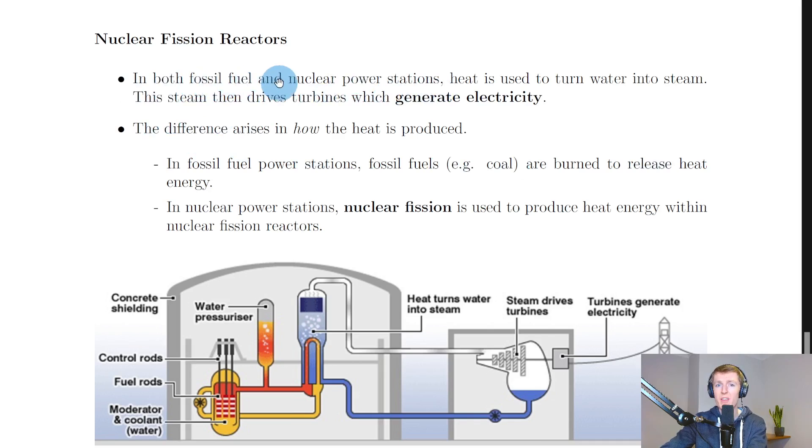It says that in both fossil fuel, i.e. thermal power stations, and nuclear power stations, heat is used to turn water into steam. This steam then drives turbines which generate electricity. So this is the process by which electricity is made.